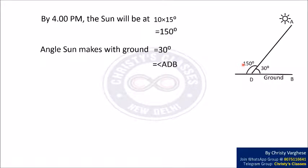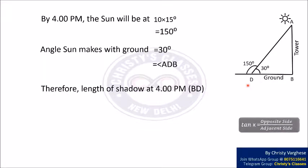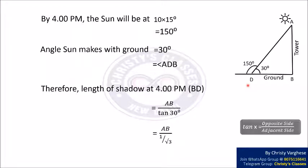From the figure, this angle is angle ADB, equal to 30 degrees. Let AB be our tower. The shadow of the tower at 4 p.m. is BD. Using tan(angle) = opposite/adjacent, BD = AB / tan(30°) = AB / (1/√3) = AB√3.